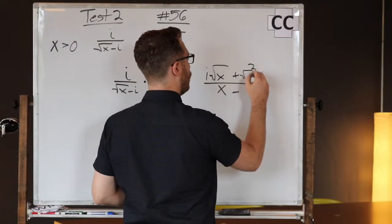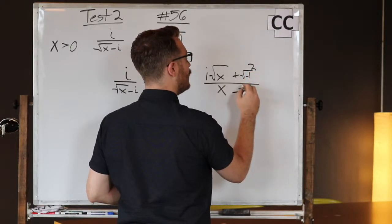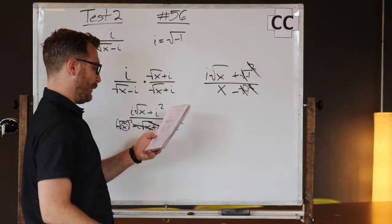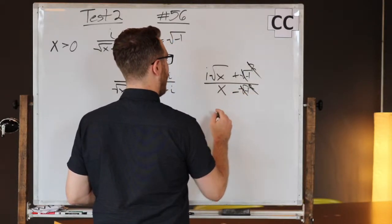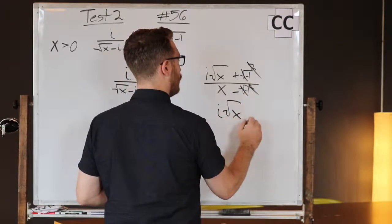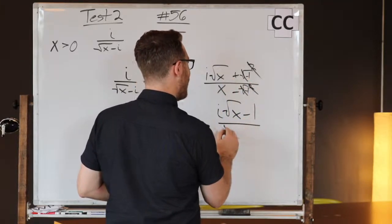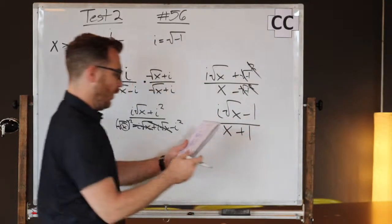square root of negative one underneath these squares both times. So the root and the square can disappear. What we end up with is i√x, and we have plus a negative one, that is minus one, and then x minus negative one, that's x plus one.